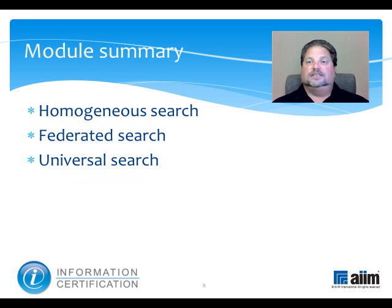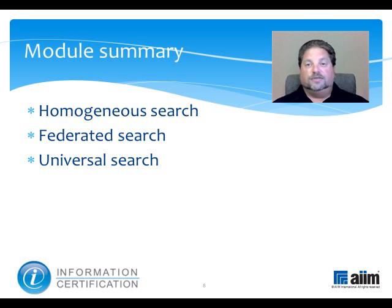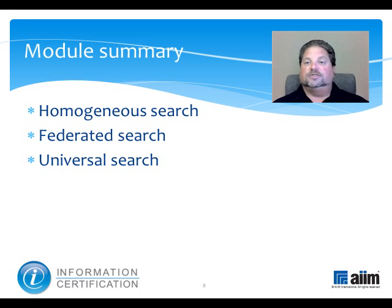This module has taken us on a tour of the three major types of infrastructure search, which are homogeneous search, federated search, and universal search. Next, you may wish to review the module on the different kinds of functional search techniques, like parametric, keyword, and semantic and pattern.